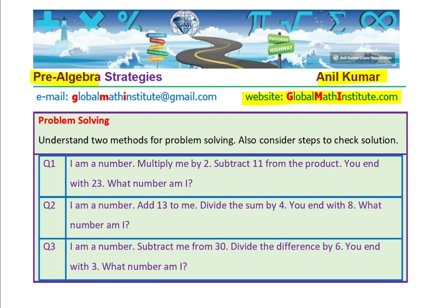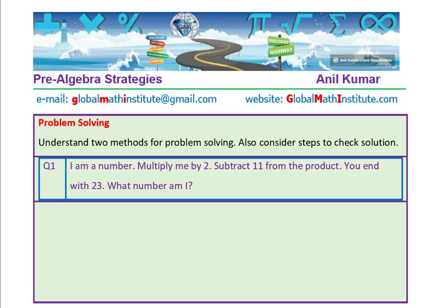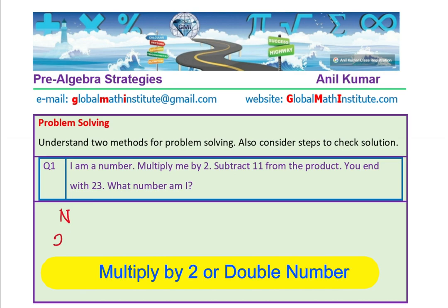Let's begin with understanding question number one. It says: I am a number. As soon as you say 'I am a number,' think about a number. We don't know what this number is, so we will write just number n. My number is n. Multiply me by 2 — that means I can write twice n, or 2n. 2 times n means multiply me by 2.